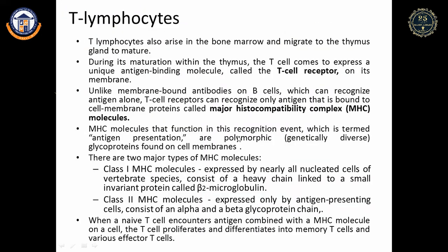T lymphocytes arise in the bone marrow and migrate to the thymus where they mature, unlike B lymphocytes which mature in the bone marrow itself. During maturation, T cell receptors (TCRs) appear on their surface. Importantly, T lymphocytes do not recognize antigen alone — only when the antigen is presented with an MHC molecule will the T cell recognize it.